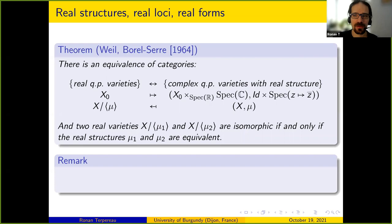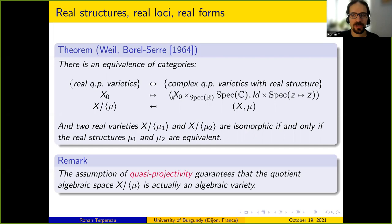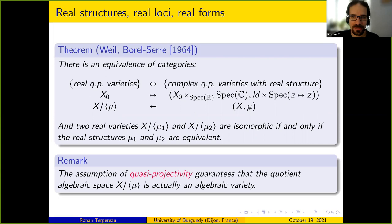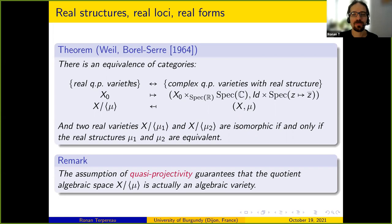One remark: the quasi-projectivity assumption ensures that this quotient exists not only as an algebraic space — which it always does — but as an algebraic variety. For this you need the descent datum to be effective, which means X must be covered by a quasi-projective open subset stable under mu. This global assumption ensures the quotient is in the right category.